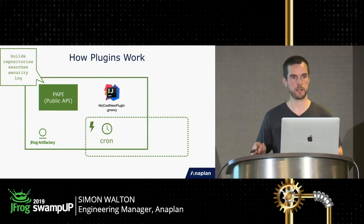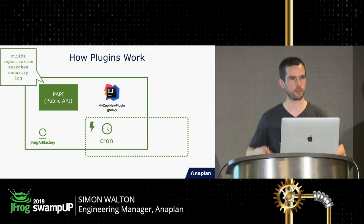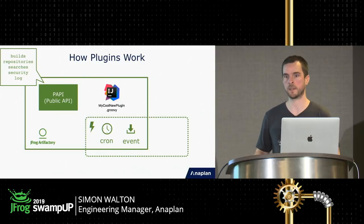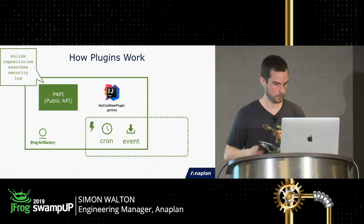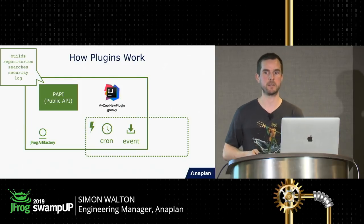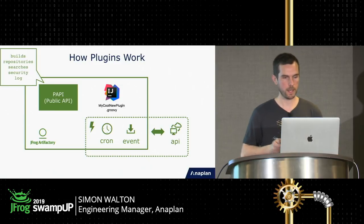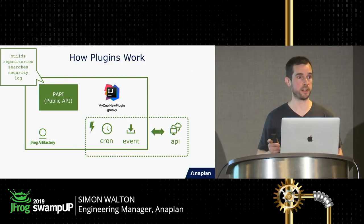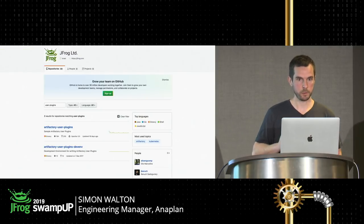Artifactory plugins have ten different types — if you look at JFrog's documentation you'll see each gives you a different DSL to work with. There are three main ways to trigger a plugin: some are cron-based (scheduled), some are event-based (for example, a build info JSON is about to be saved, or a user has initiated a download and you want to modify behavior), and promotion plugins have a dedicated REST endpoint from outside — they are user-initiated via the REST API.